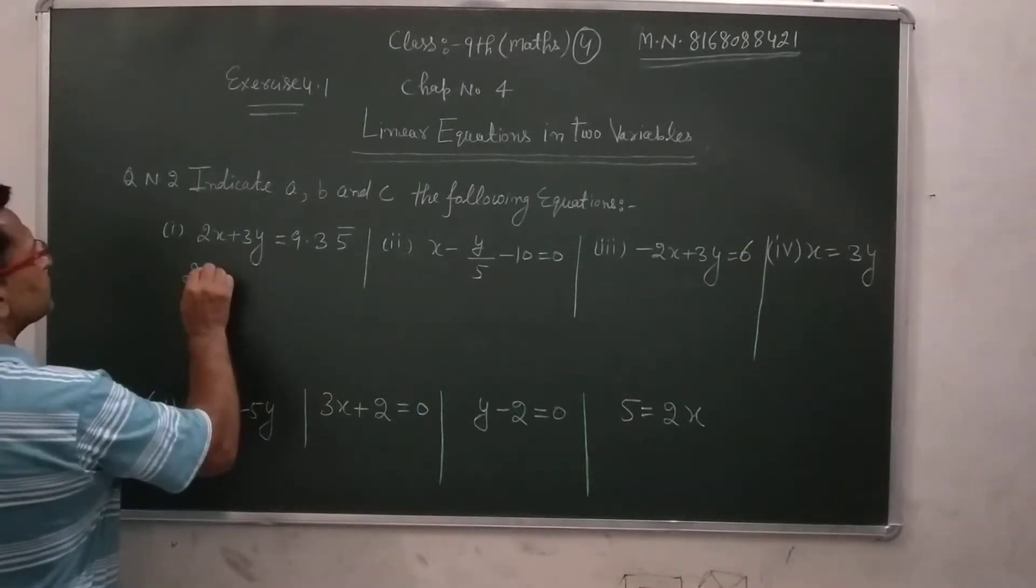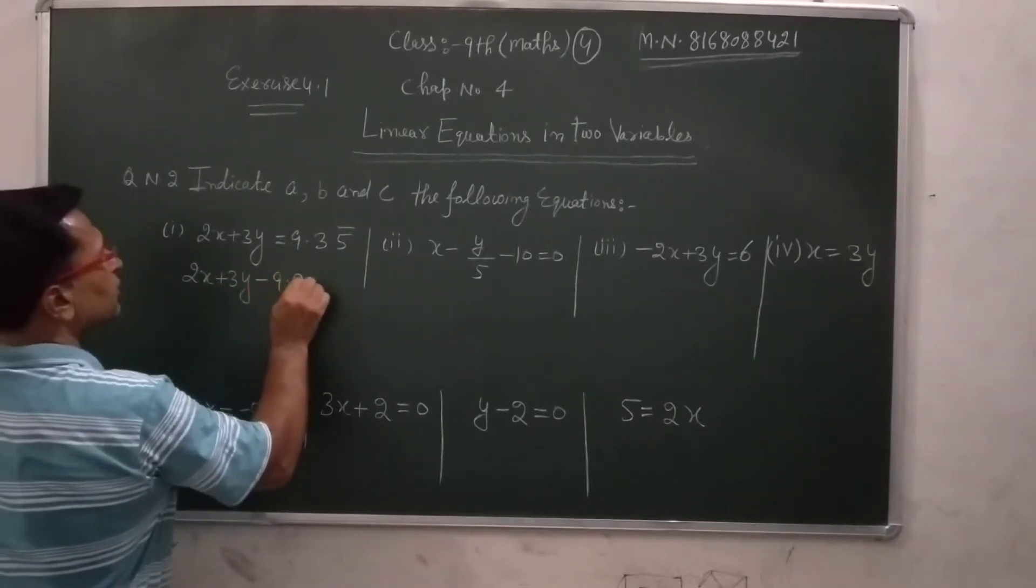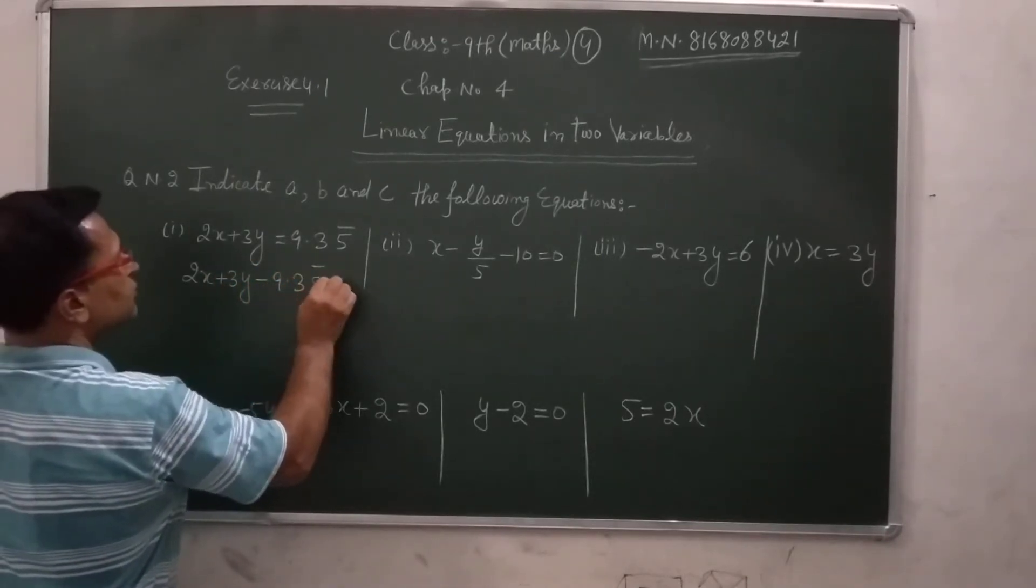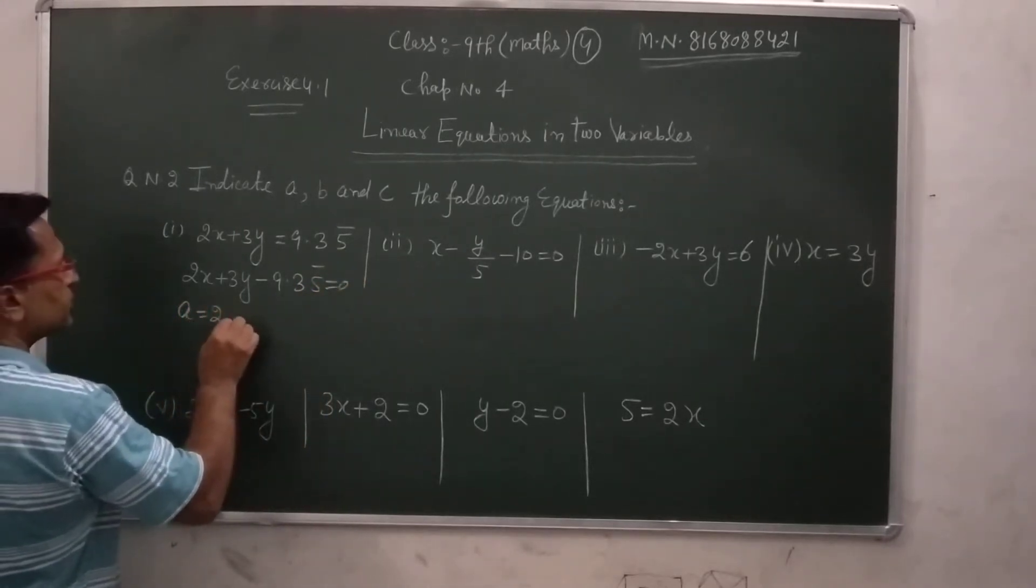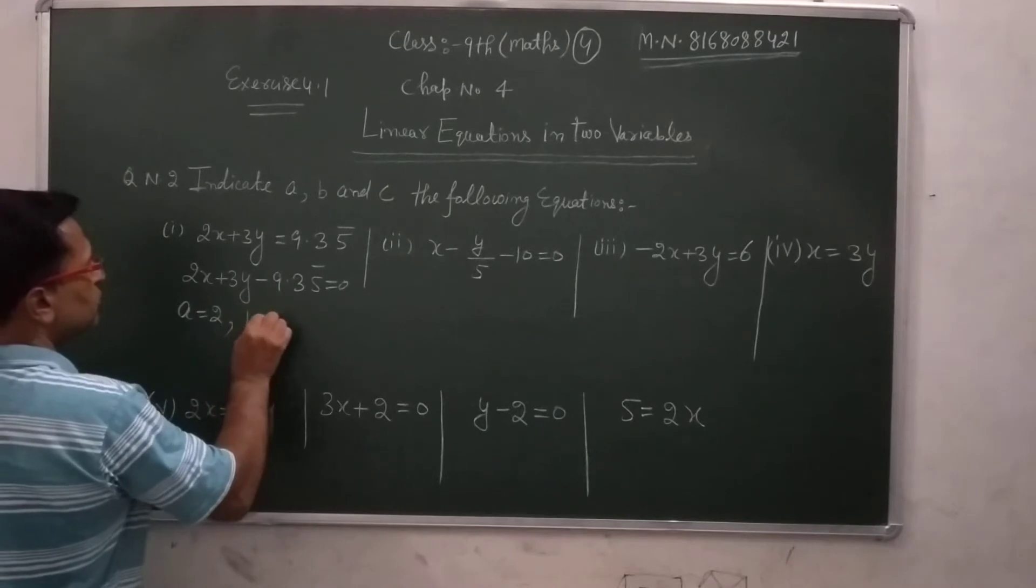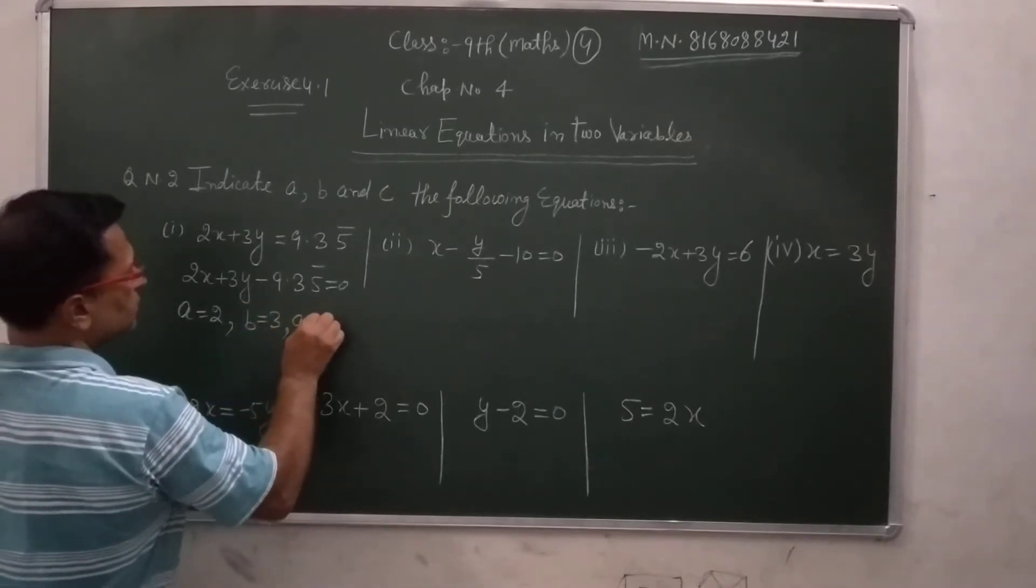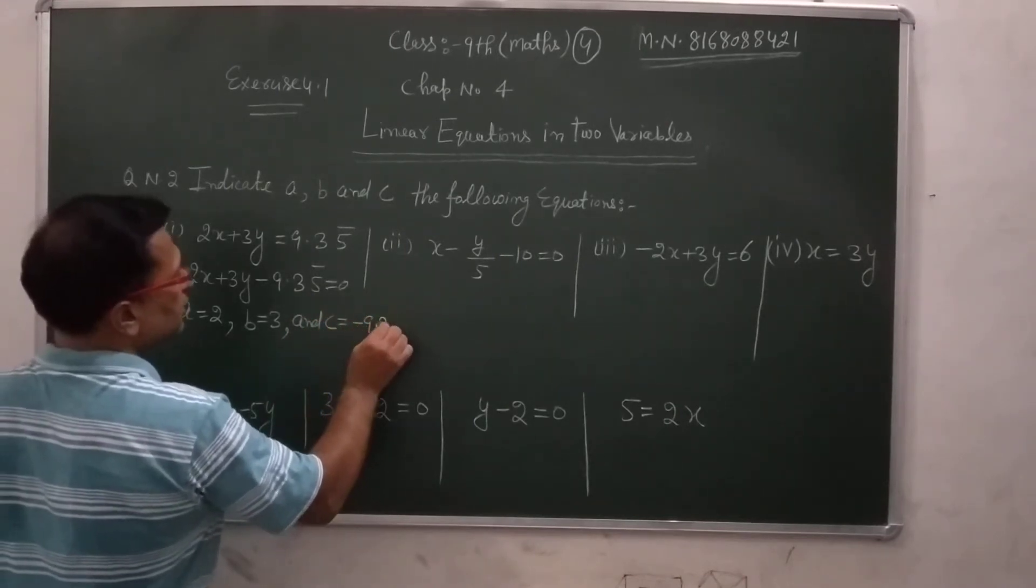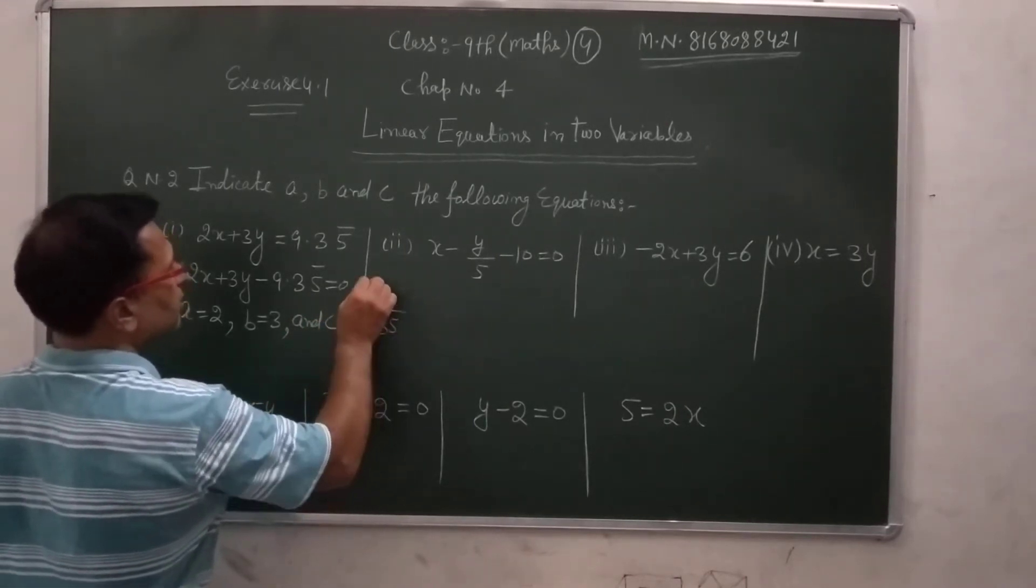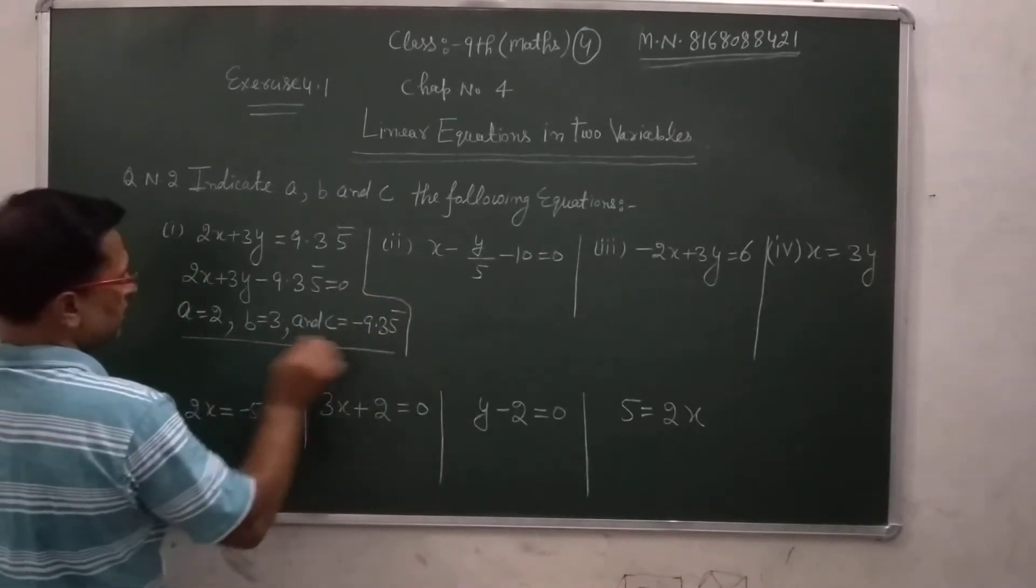2x plus 3y minus 9.35 is equal to 0. Then A is equal to 2, the coefficient of x; B is equal to 3, the coefficient of y; and C is equal to minus 9.35. This is how we have done, this is how we have indicated.